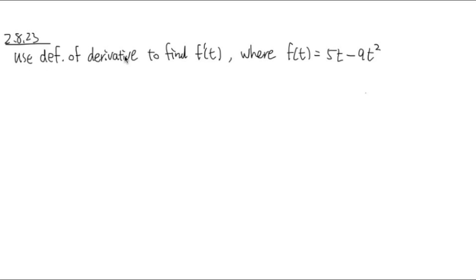2.8.23, we are going to use the definition of derivative to find f'(t), where our function is f(t) equals 5t minus 9t squared.